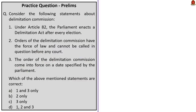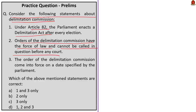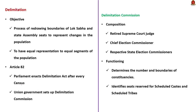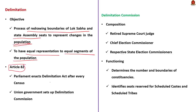The next question: consider the following statements about the Delimitation Commission. Statement 1: under Article 82, the Parliament enacts a delimitation act after every election. Statement 2: orders of the Delimitation Commission have the force of law and cannot be called in question before any court. Statement 3: the order of the Delimitation Commission comes into force on a date specified by the Parliament. Delimitation is the process of redrawing boundaries of Lok Sabha and state assembly seats to represent changes in population, mainly done to give equal representation to equal segments. Under Article 82, the Parliament enacts a delimitation act after every census.